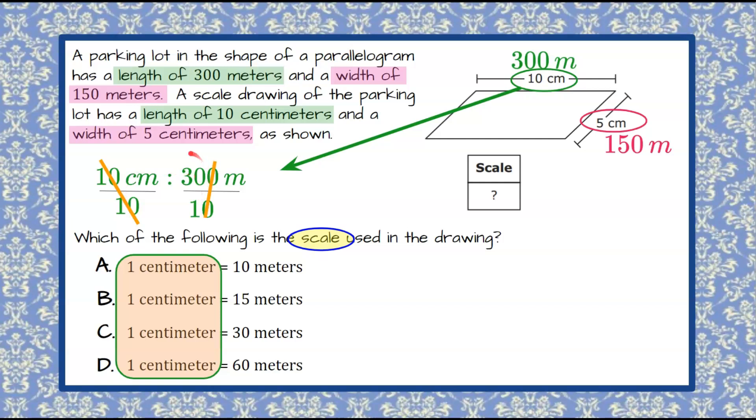300 divided by 10 would be 30, so we can rewrite this to be 1 centimeter to 30 meters, which is answer C.